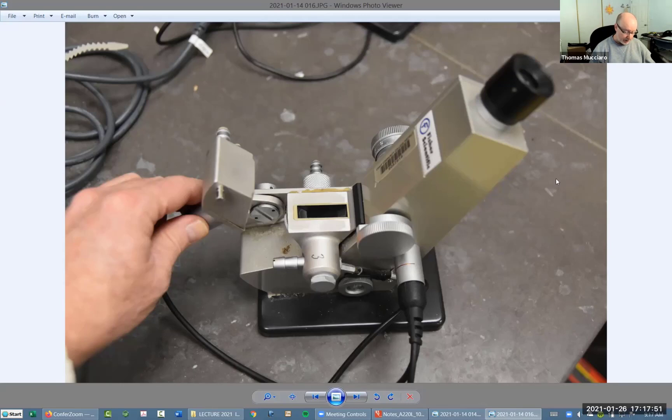So what we're going to do with this thing then is we're going to put our sample here on the glass prism, covering it up. Then we close this top down and basically we sandwich the liquid sample in between the two glass prisms.